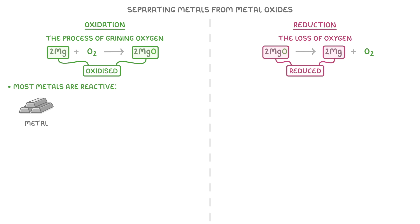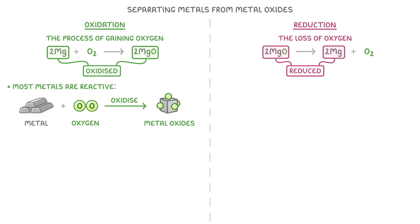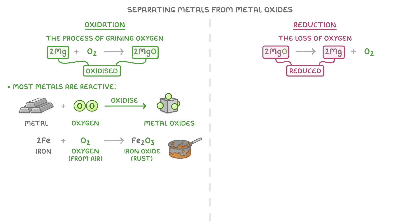Now, as most metals are fairly reactive, when they're exposed to oxygen they'll oxidise into a metal oxide. For example, iron naturally reacts with the oxygen in the air to form iron oxide, which is more commonly known as rust.